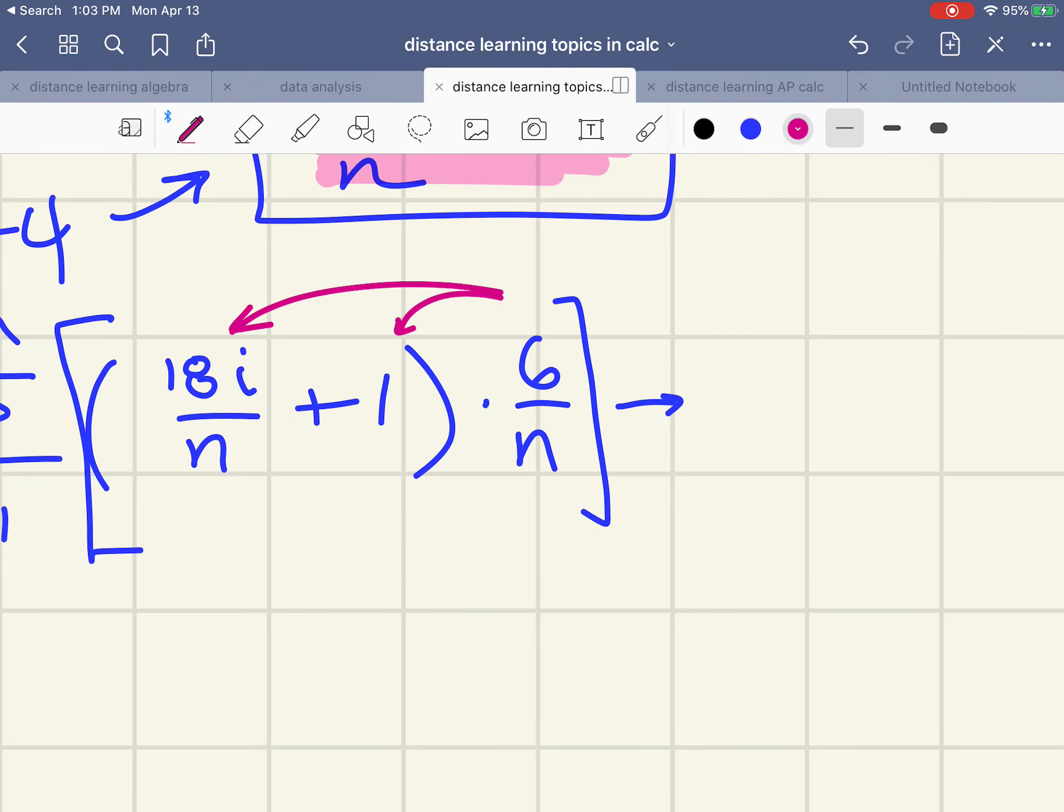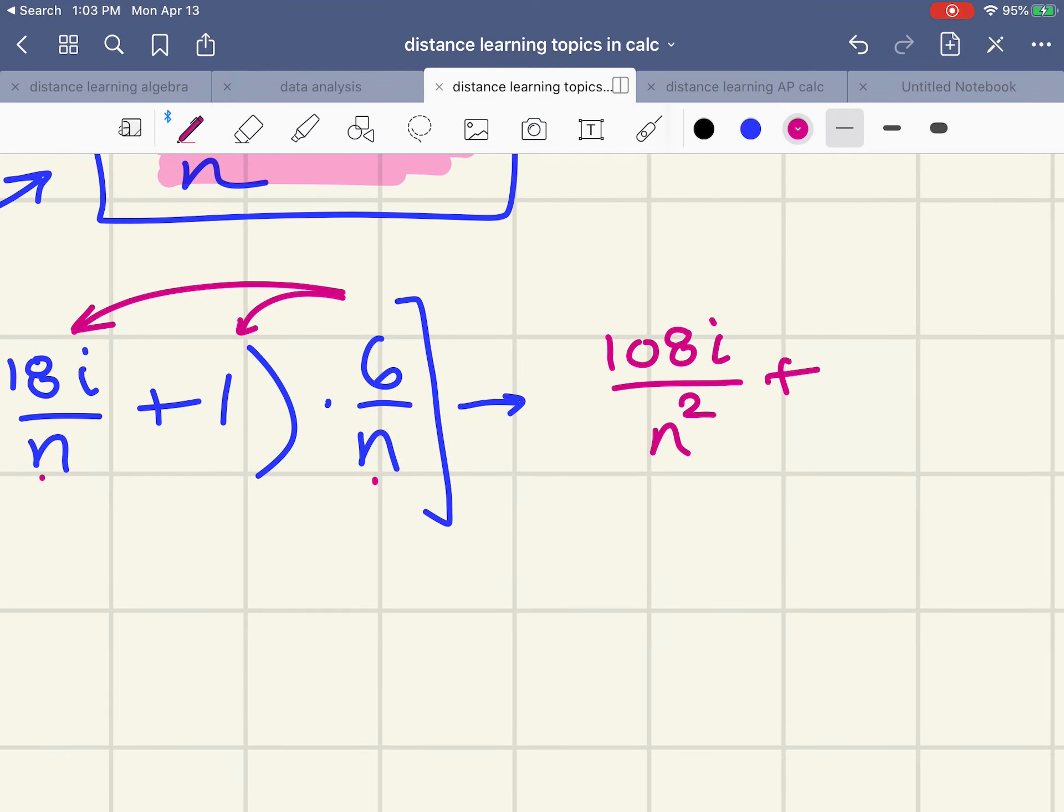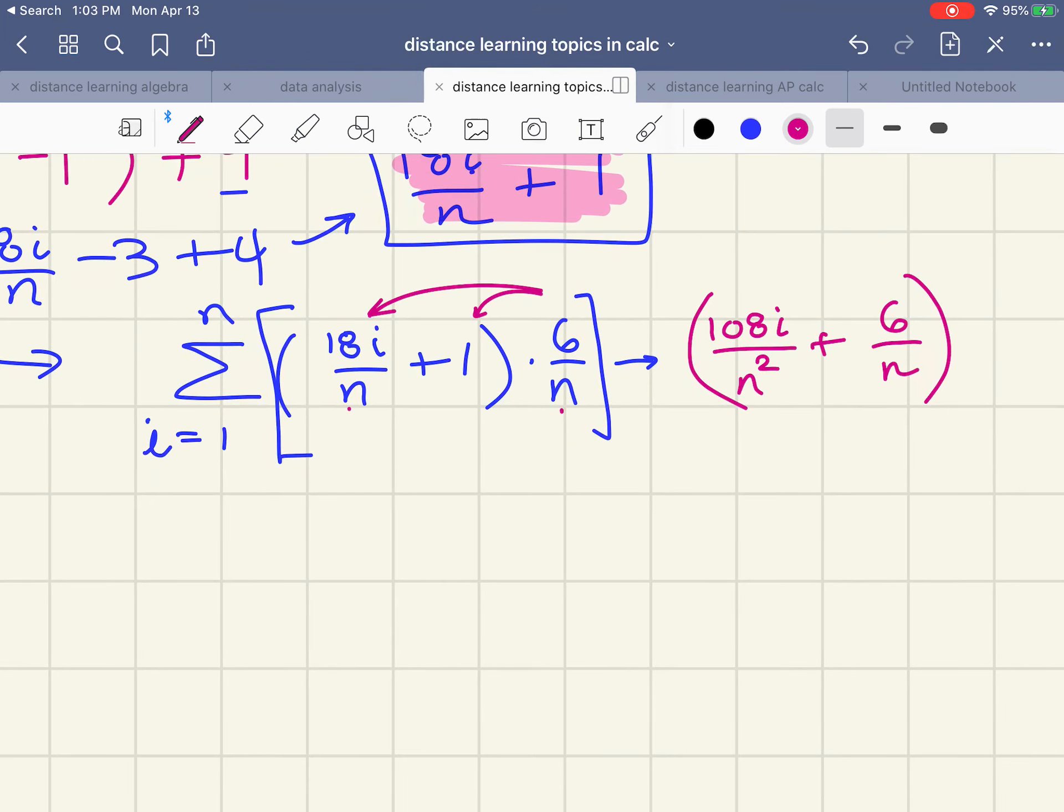And I'm going to distribute the six over n into each here. 18 times six, 108i over n squared because I have n times n, and then I have plus six over n, so really I have sigma i from one to n of all of that.